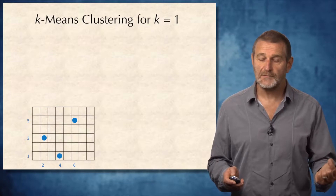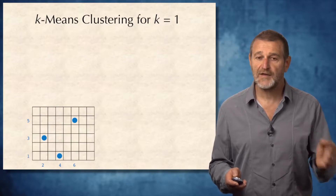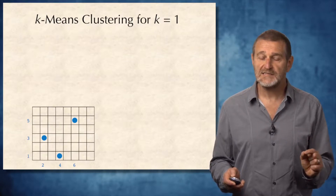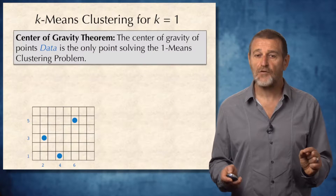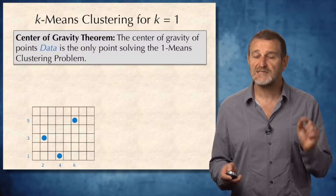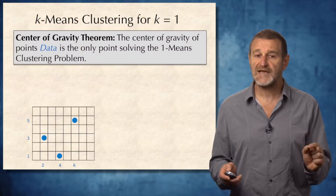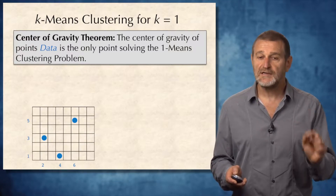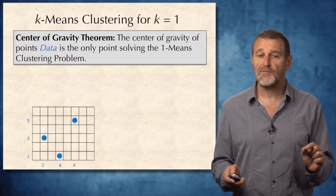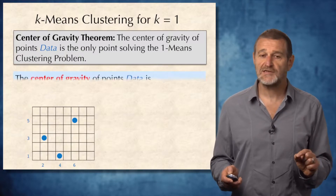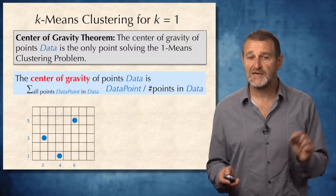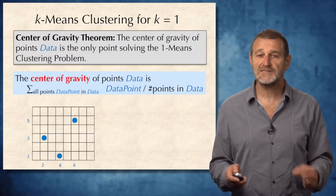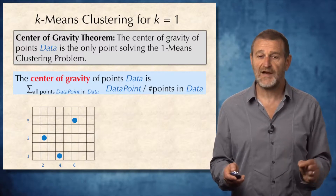How do we develop an algorithm for k-means clustering when k equals 1? In this case, there is the center of gravity theorem, which tells us that the center of gravity of the points in the dataset is the only point solving the 1-means clustering problem. The center of gravity, if we represent every point as a vector, is simply the sum of these vectors divided by the number of vectors in the dataset.